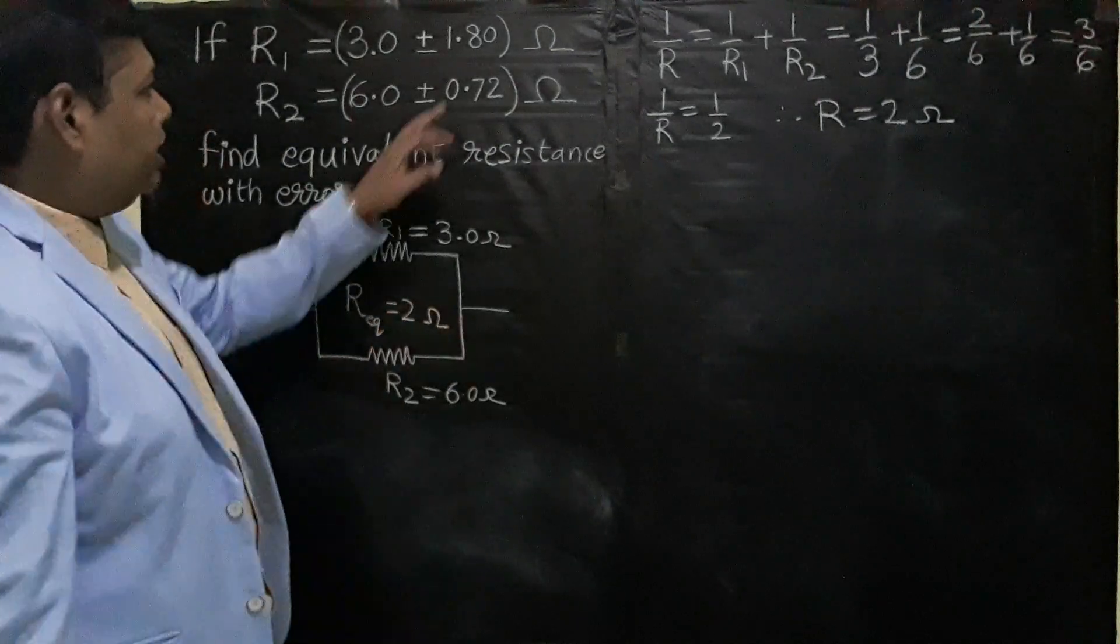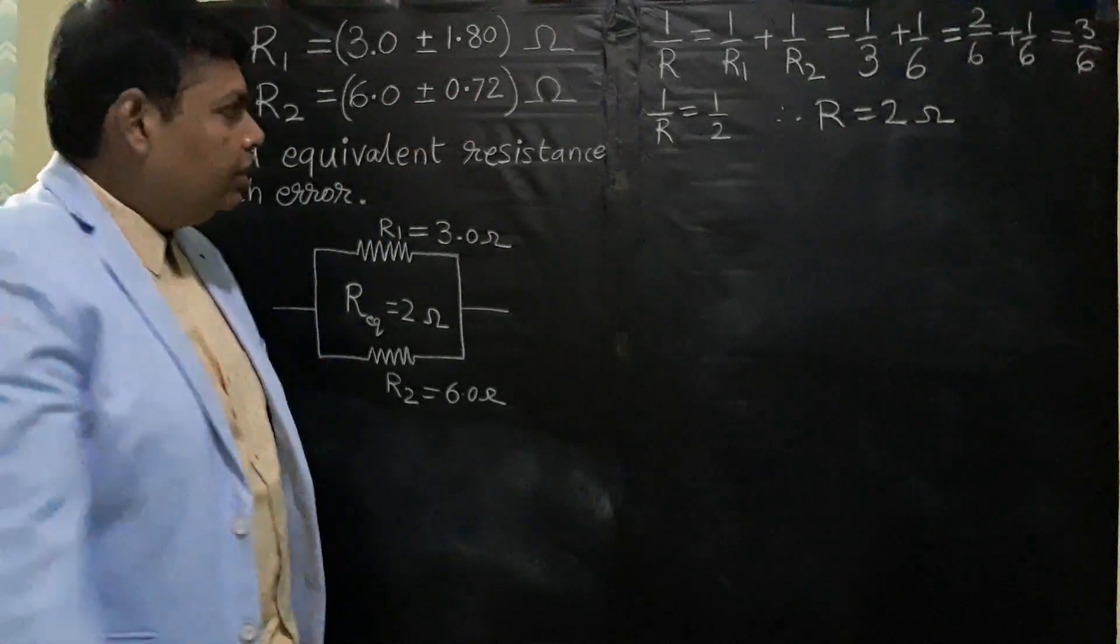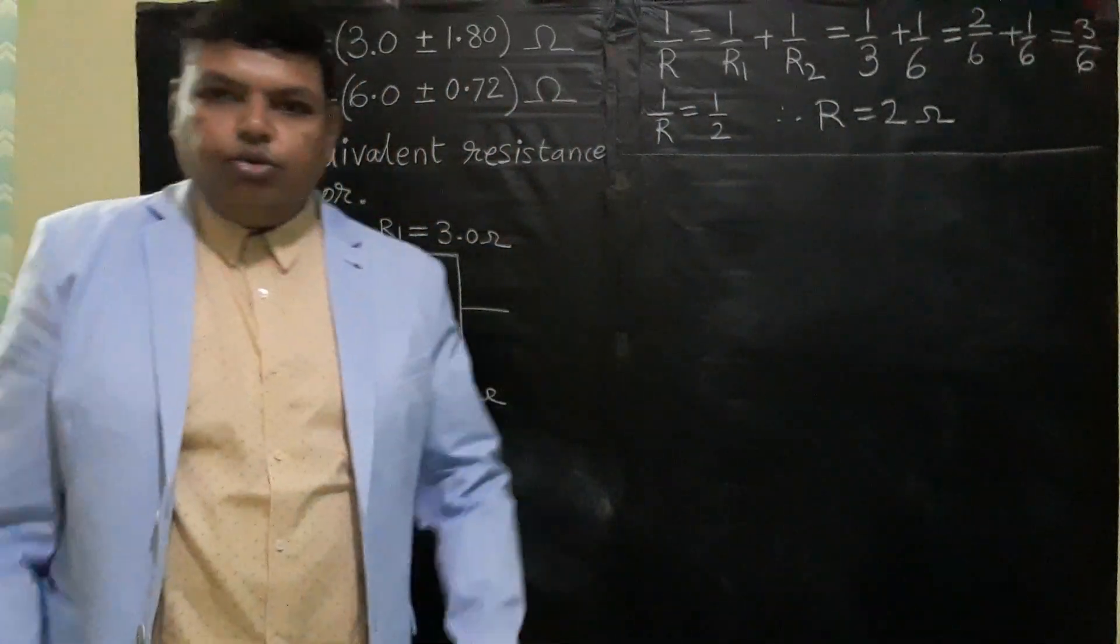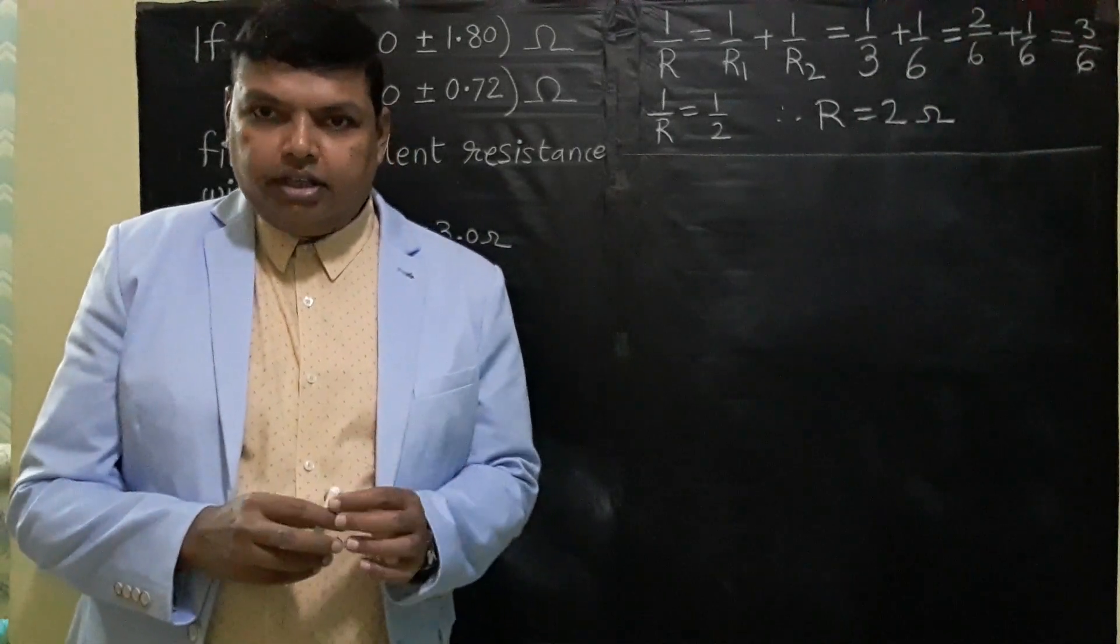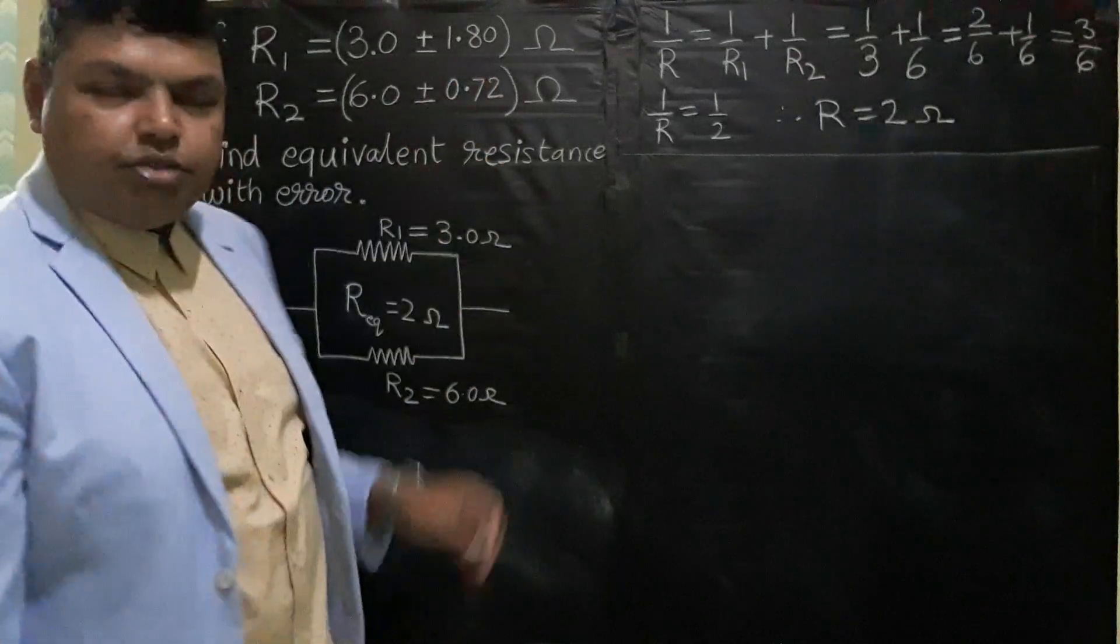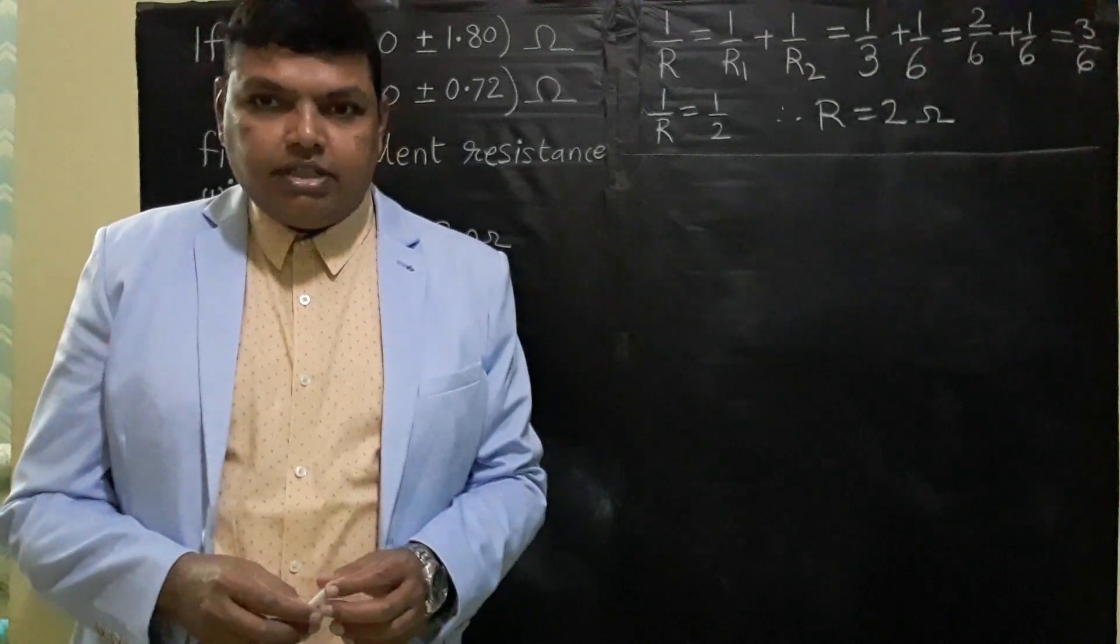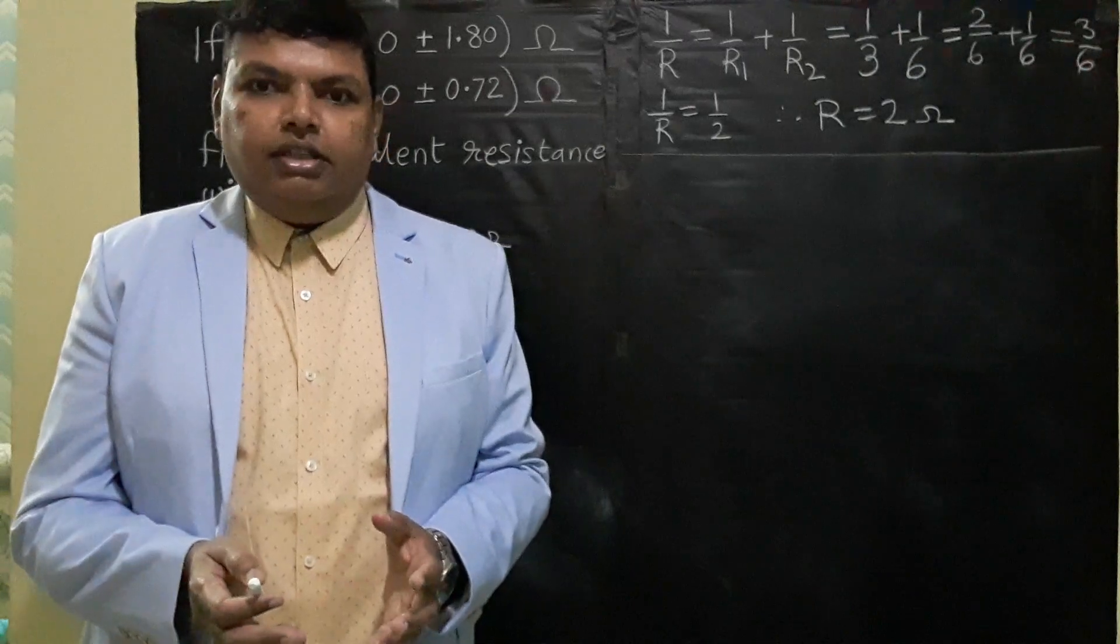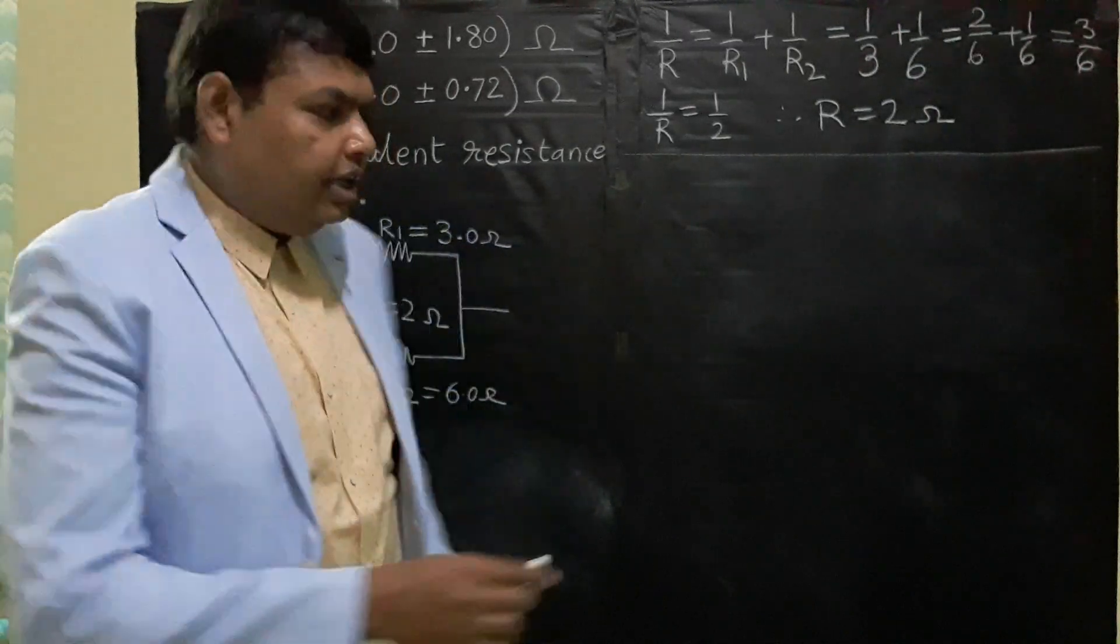But what is the error? How do we find out the net error in this combination? For finding the net error, we must understand that error quantities are very small. When we deal with very small quantities we can use differentiation. Therefore in order to find the amount of error in these quantities we can use the differentiation method.